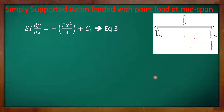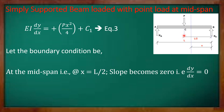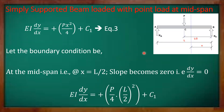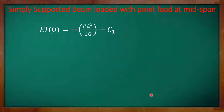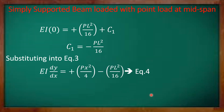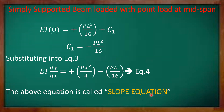We apply our boundary condition: for this simply supported beam, the slope at mid-span is zero. So at x equals L/2, dy/dx equals zero. Substituting into equation three: EI times 0 equals P/4 times (L/2)² plus C1, which gives 0 equals PL²/16 plus C1. Therefore C1 equals minus PL²/16. Substituting back, the slope equation becomes EI dy/dx equals Px²/4 minus PL²/16.